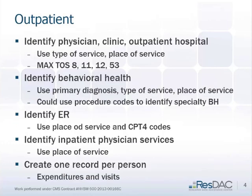The outpatient algorithm — they're really hard to see just the code on screen — does a few different things. The main role of the code is to identify mental health and to identify ER. For mental health, there is a type of service code for psychiatric: MAX type of service 53. A lot of what you consider mental health is identified with that 53, but some isn't.